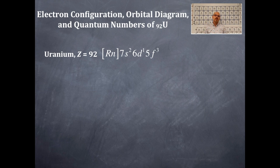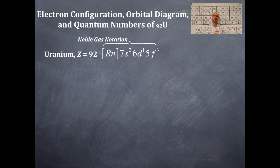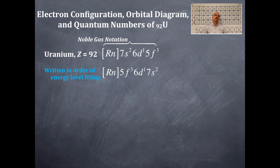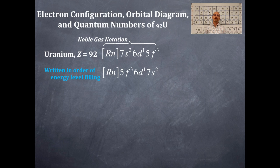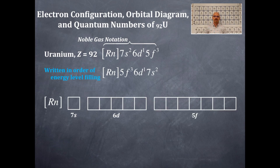We're also going to rewrite this with the lowest energy electrons closer to the nucleus, that is closer to the noble gas. So this is the noble gas notation, and this is the other way of writing it — the order of filling — which is Radon with 5F3, because the 5 is lower than the 6, and then 6D1, because the 6 is lower than the 7, so that's why it's interior. The exterior, outermost electrons, are in the 7S2.